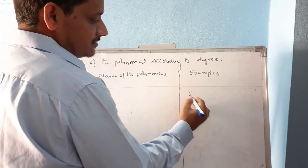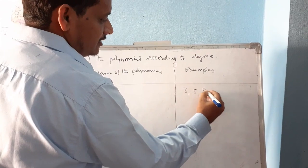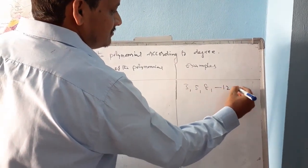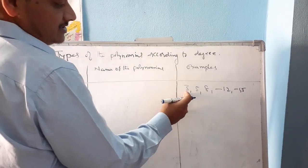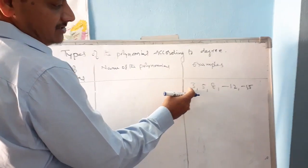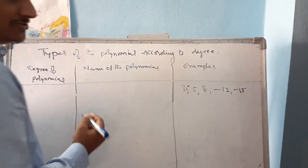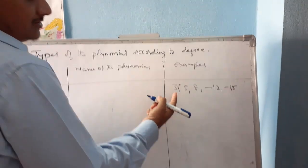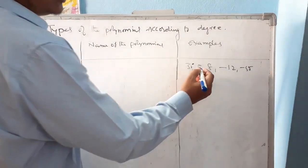Now, for the types of polynomial according to degree, consider the example: the constant 3 can be written as 3 × x⁰. So the degree of this polynomial is 0.